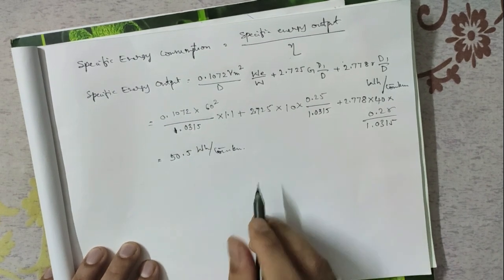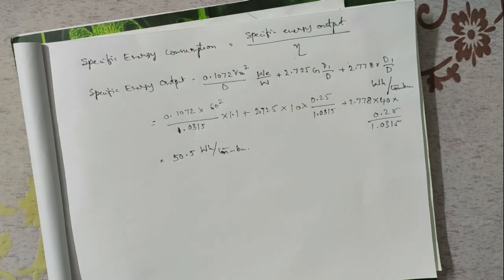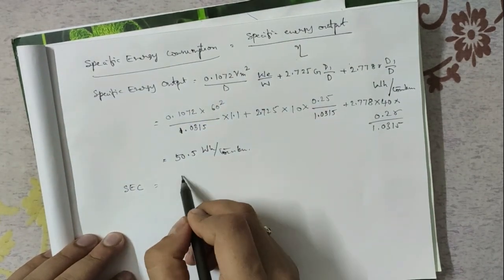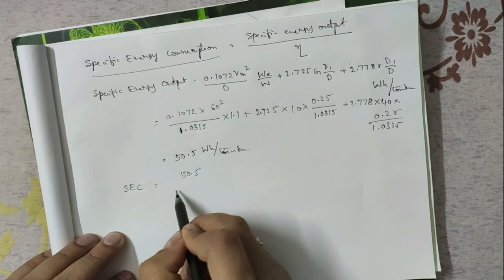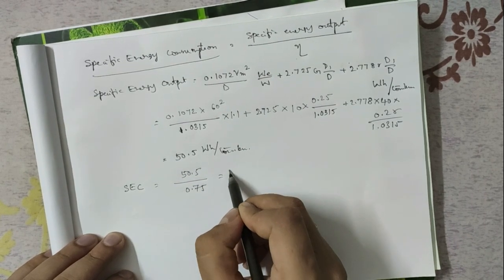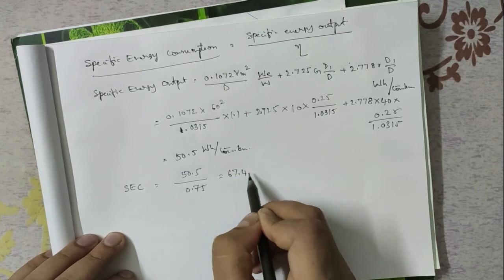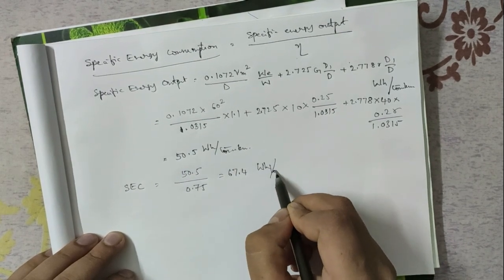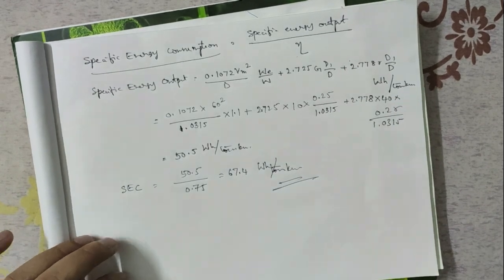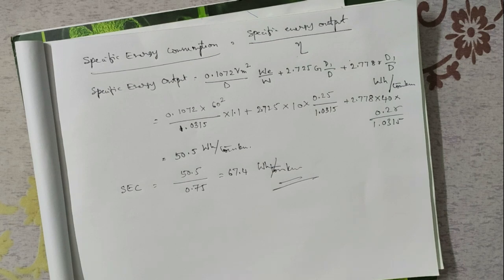Specific energy consumption = specific energy output / efficiency = 50.5 / 0.75 = 67.4 Wh per ton-km. So the two answers for this problem are: schedule speed = 32.4 kmph and specific energy consumption = 67.4 Wh per ton-km.